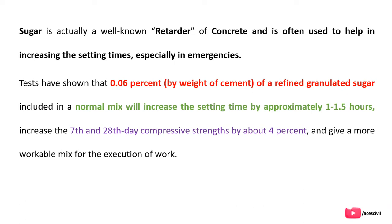Sugar is actually a well-known retarder of concrete and is often used to help increase the setting times, especially in emergencies. Tests have shown that 0.06% by weight of cement of refined granulated sugar included in the normal mix will increase the setting time by approximately 1 to 1.5 hours and increase the 7th and 28th day compressive strength by about 4%.